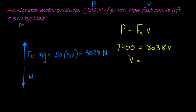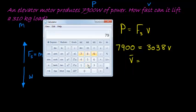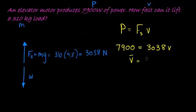So what is the velocity at which it can lift that load at a constant velocity, by the way? Let's see. We just divide both sides with the 3038. So we get 7900 divided by 3038. What do we get? 2.6. That's actually a nice answer. 2.6 meters per second. Upwards. And there we go.